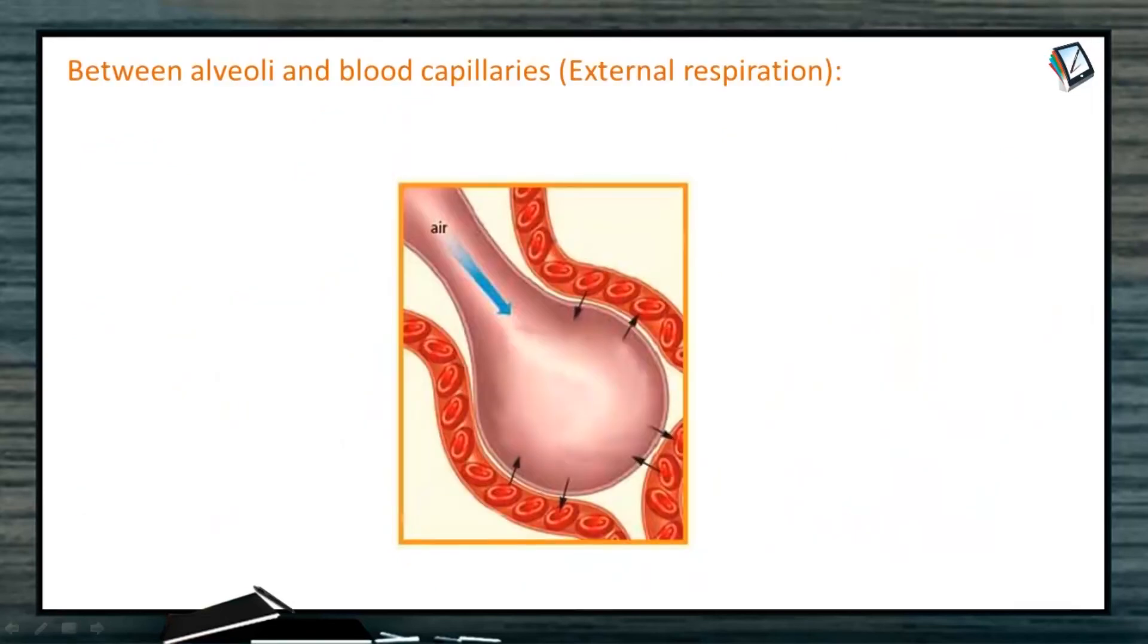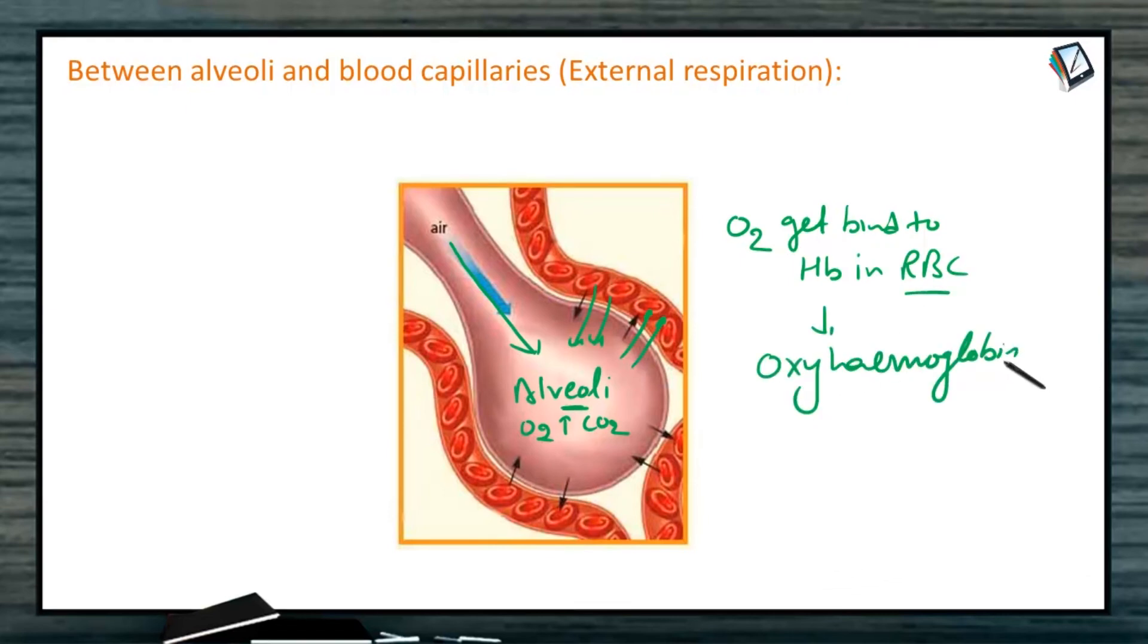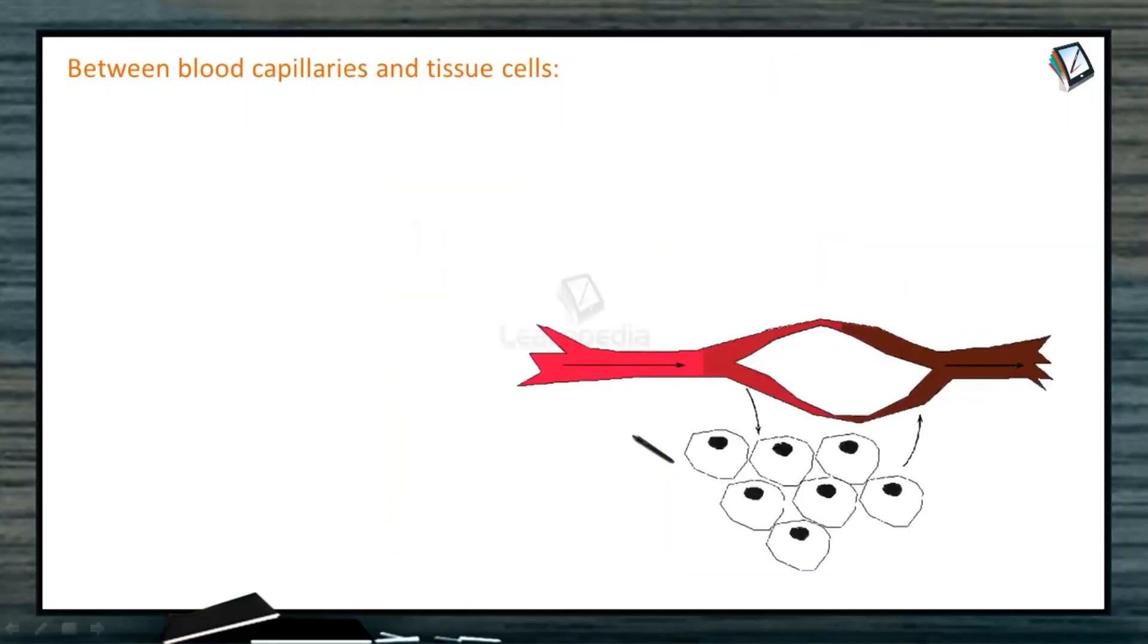By one more way we will try to understand external respiration, means exchange between alveoli and blood capillaries. You can see here air is rushing into alveoli and here pressure of oxygen will be high and CO2 will be less. CO2 will move out from capillaries to alveoli and O2 will diffuse in from alveoli to capillaries. O2 will get bound to hemoglobin in RBC and finally transports in the form of oxyhemoglobin. Around alveoli there are capillaries releasing CO2 and getting O2.